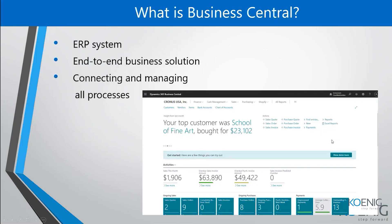Before starting with actual reports, let's understand what Business Central is. This is an ERP system — Enterprise Resource Planning. It's a complete end-to-end business solution for small to medium-sized businesses, used to connect and manage all processes. You have different data in your company like finance, sales, purchasing, inventory, and all of this is connected and managed under one hood in Business Central, making the process easier and simpler.